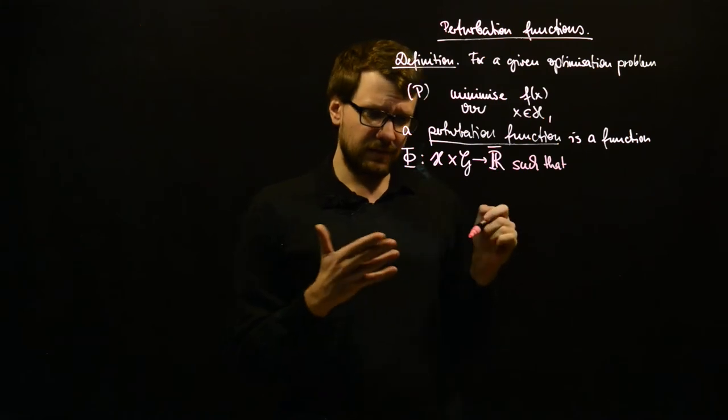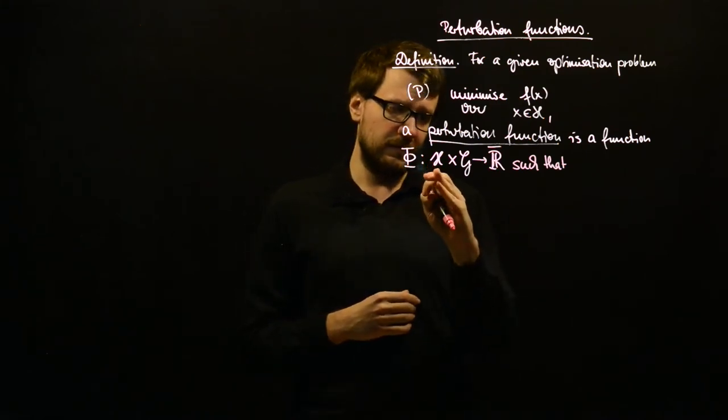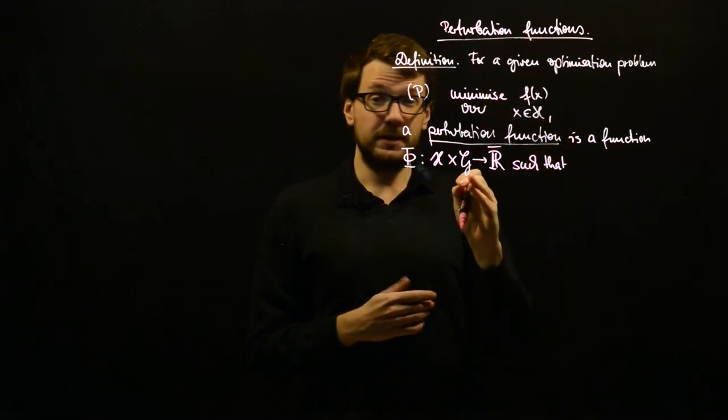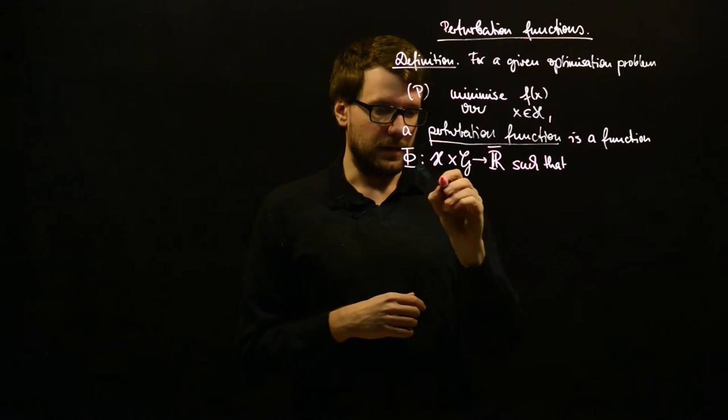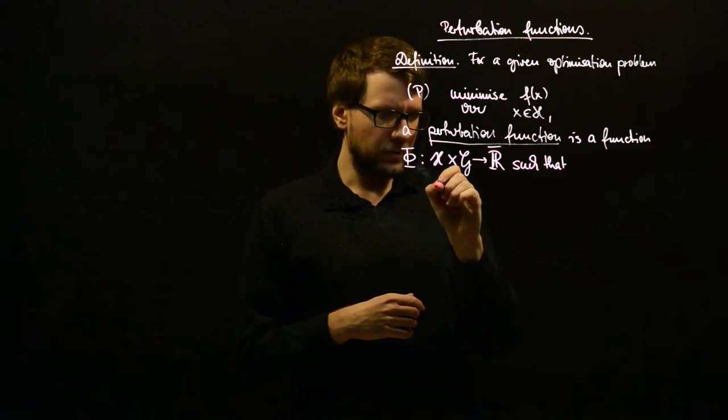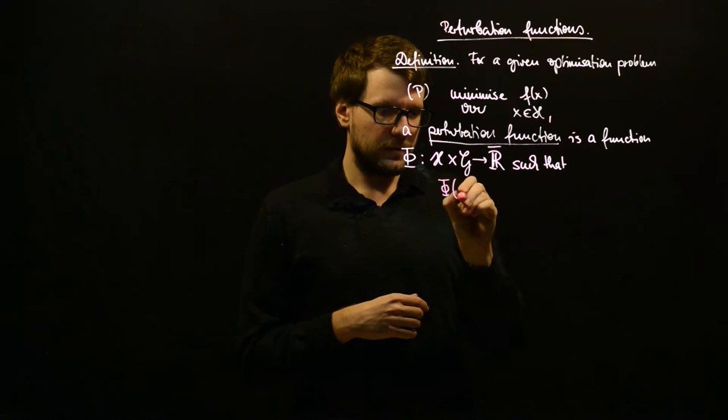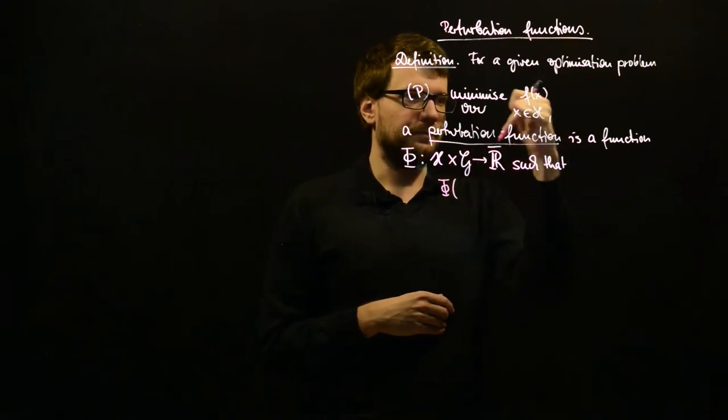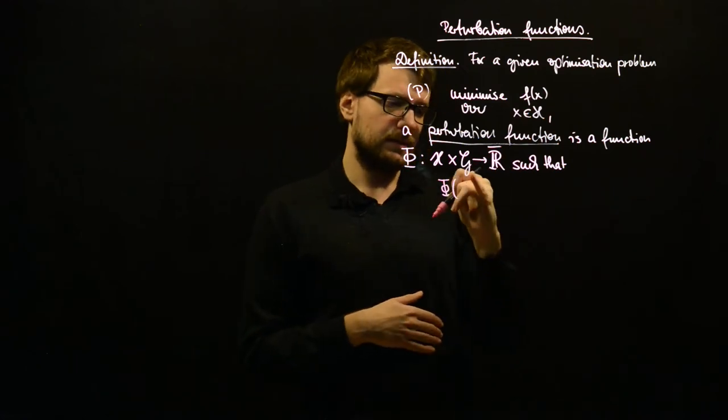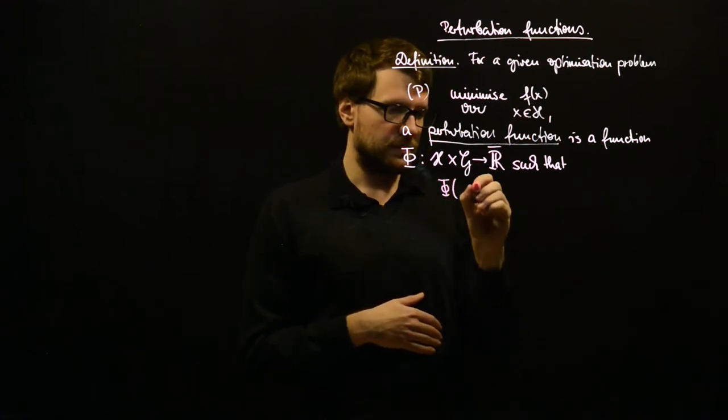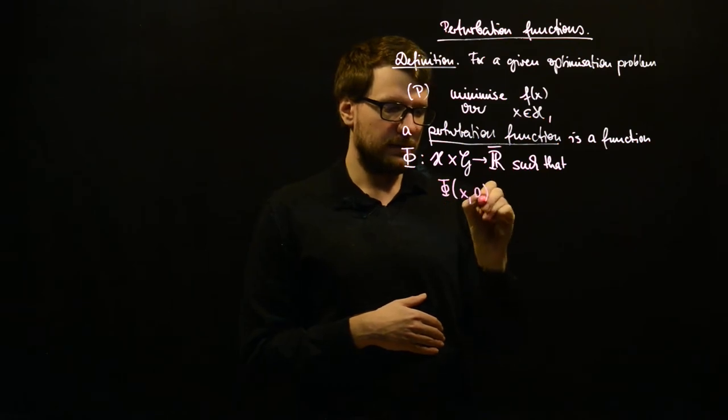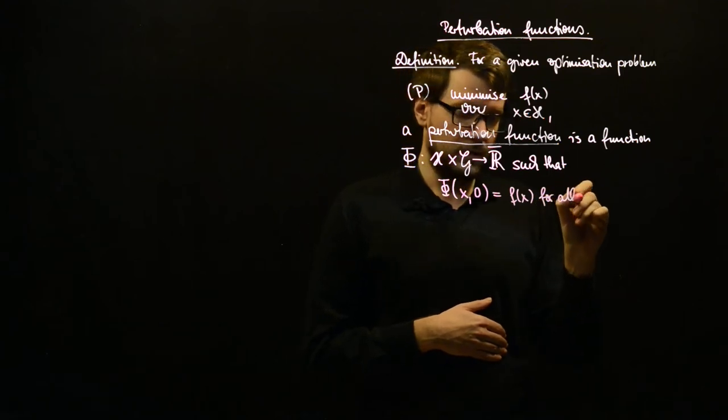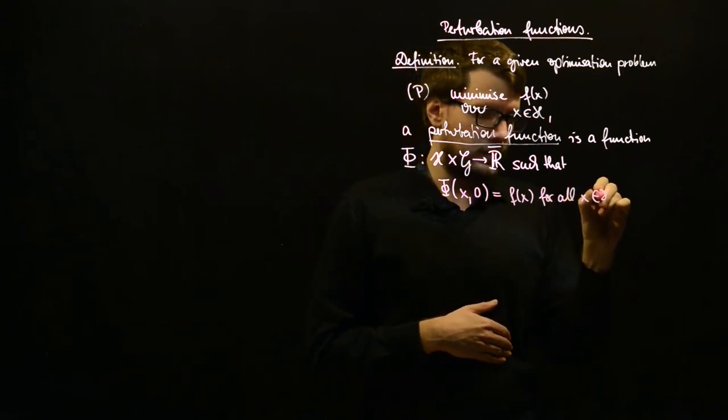And as you see, phi takes two variables, one from the space of our optimization problem, and G from just a different space. And the important thing is that we want to recover the original objective function f by just setting this second variable to zero. So, such that phi(x,0) is equal to f(x) for all x in H.